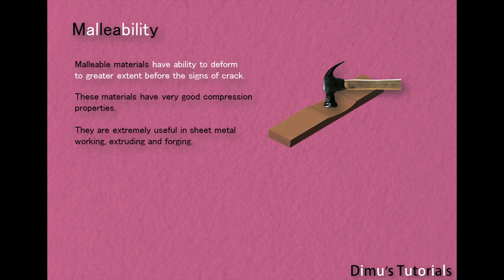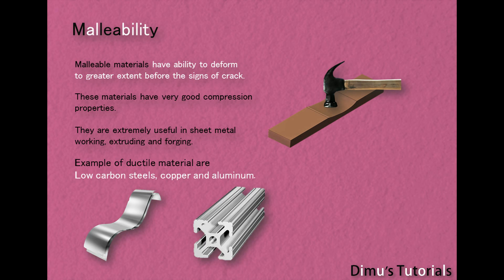Malleability. Malleable materials have the ability to deform to a greater extent before the signs of crack. These materials have very good compression properties. They are extremely useful in sheet metal working, extruding and forging. Examples include low carbon steels, copper and aluminum.